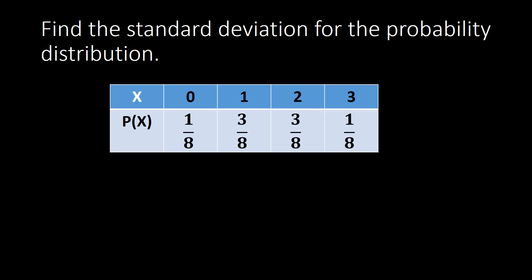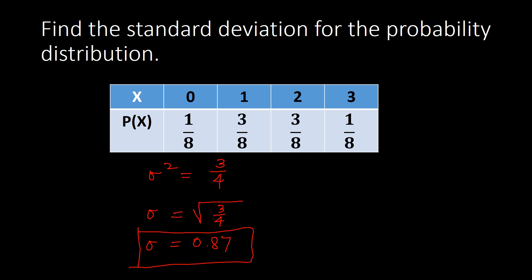For the standard deviation, we don't need the table — once you have the variance, you can find the standard deviation directly. The standard deviation σ is just the square root of the variance, so σ = √(3/4), and your standard deviation equals approximately 0.87, rounded to the nearest hundredths.